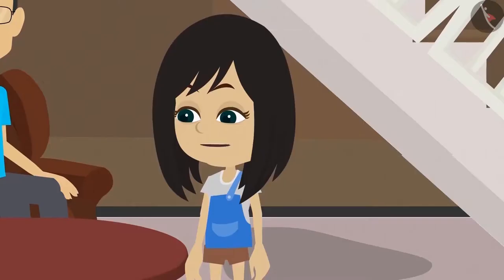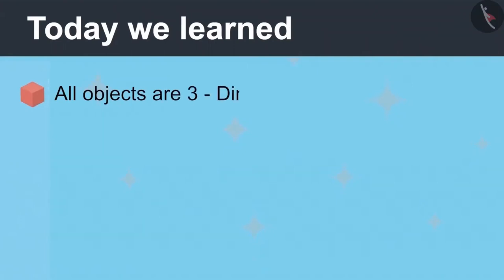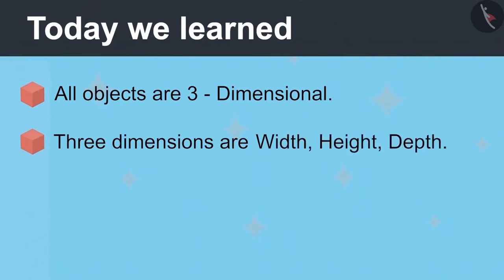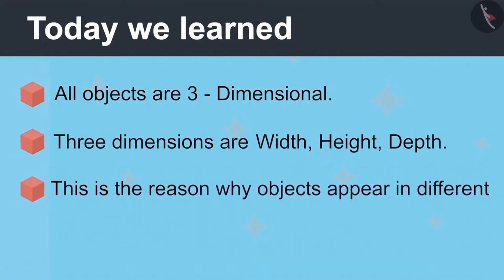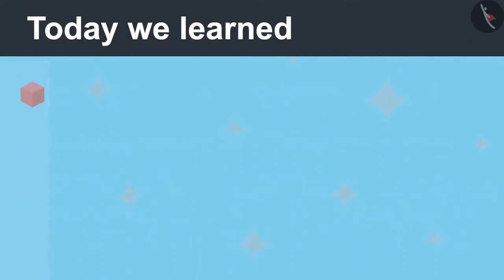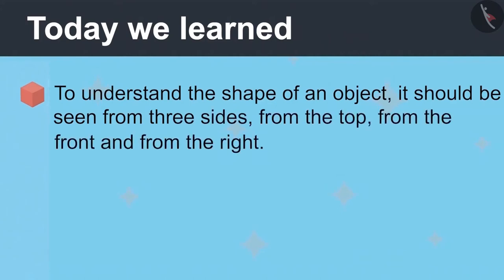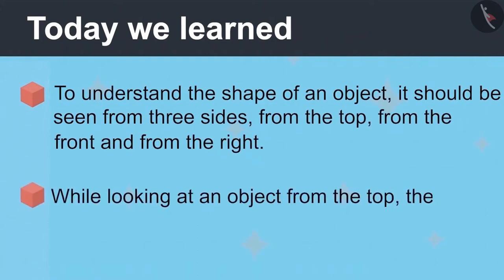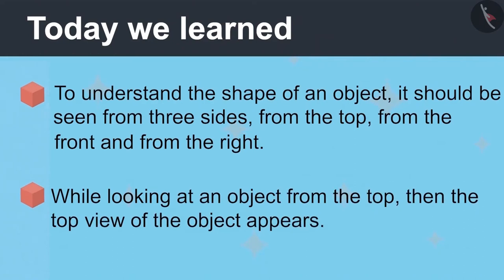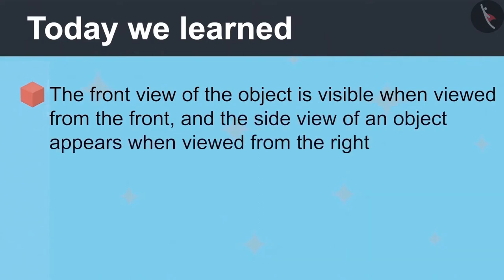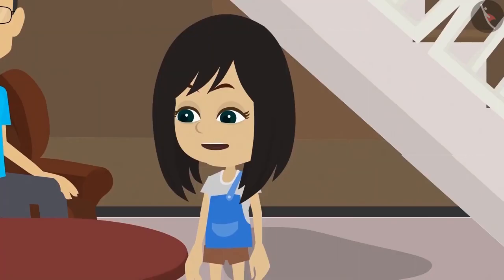Now I have fully understood that all objects are three-dimensional. The three dimensions are width, height, and depth. Because of this, objects appear to be of different shapes when viewed from different sides. To understand the exact shape of an object, one must look at it from three sides — from the top, front, and from the right side. The top view appears when viewed from the top, the front view when viewed from the front, and the side view when viewed from the right side. Now you both play, and we'll tell everyone about 3D in school tomorrow.